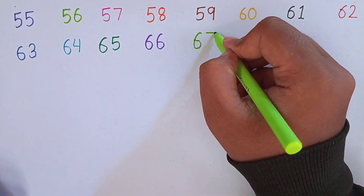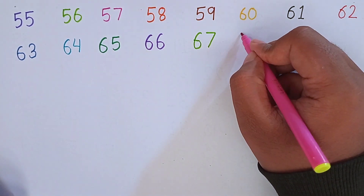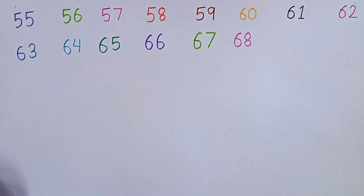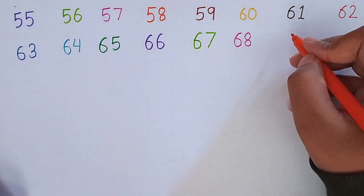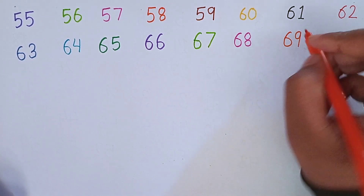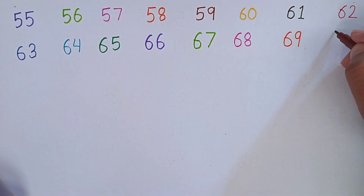After 66, I am writing 67. 6, 7 — 67. This is 67. After 67, I am writing 68. 6, 8 — 68. After 68, I will write 69. 6, 9 — 69. After 69, I am going to write 70. 7, 0 — 70.